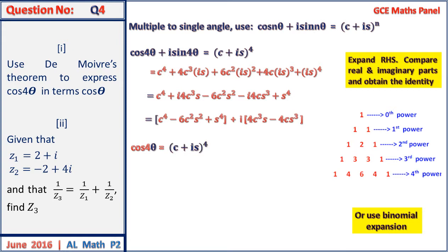cos 4θ is equal to the real part of cis 4θ, and this will be equal to cos⁴θ minus 6cos²θ·sin²θ plus sin⁴θ. But the equation requires us to give a final answer in terms of cos θ only.